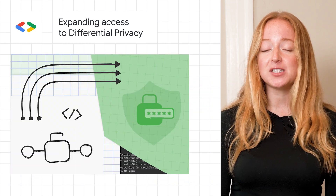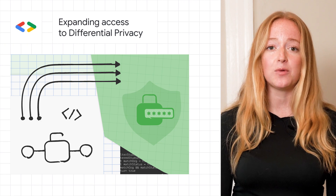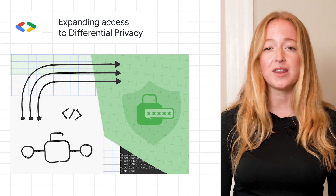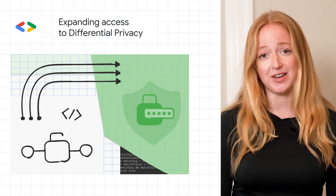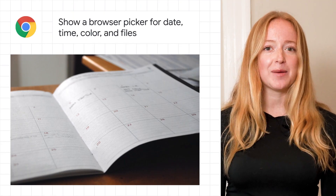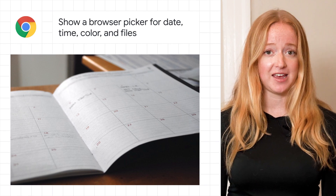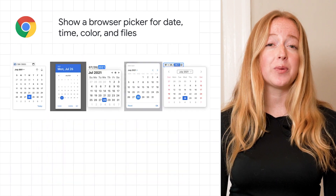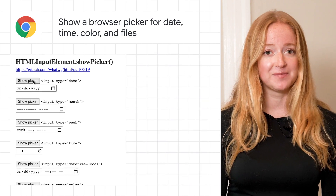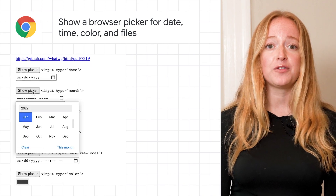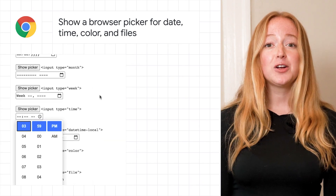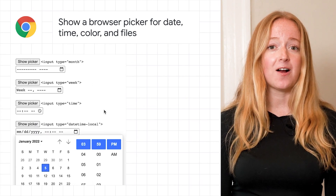We encourage developers around the world to take this opportunity to experiment with differential privacy use cases, which can provide useful insights and services without revealing any information about individuals. Over the next few weeks, Chrome 99 will ship with the HTML input element show picker method, a canonical way to show a browser picker not only for dates, but also time, color, and files. This community-driven spec will also work for input elements with suggestions powered by data list or autocomplete. Learn more about how to implement show picker on the Chrome blog.